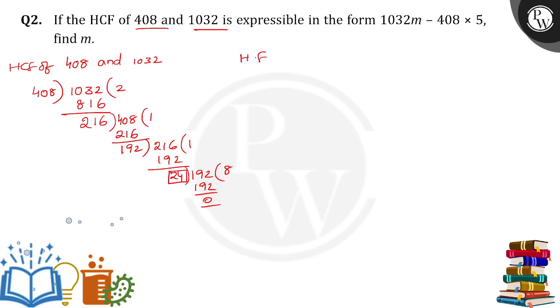The HCF of 408 and 1032 is 24. So if we can express 24 in this form: 1032m minus 408 times 5 equals 24.